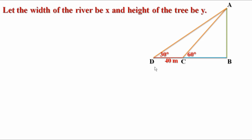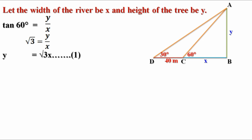Let the width of the river be x and height of the tree be y. Let us look at the triangle ABC. Consider angle 60. AB is the opposite side and BC is the adjacent side. So let us take tan60 that is equal to AB by BC or y by x. The value of tan60 is root 3. So we can write it as root 3 equal to y by x. Cross multiplying, we get y equal to root 3 x.